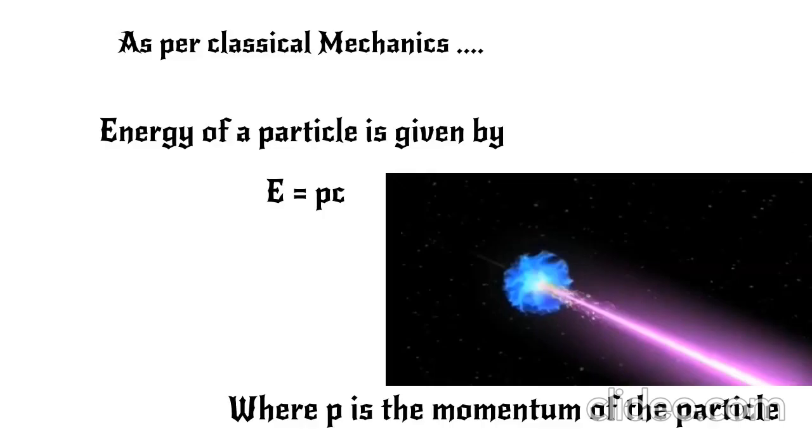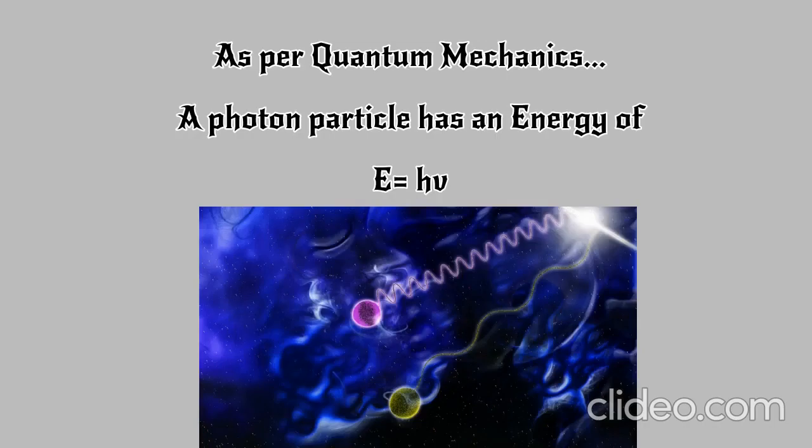From classical mechanics, we know that mass and energy are equivalent and an object with mass m has an energy E equals pc, where p is the momentum of the object and c is the velocity.